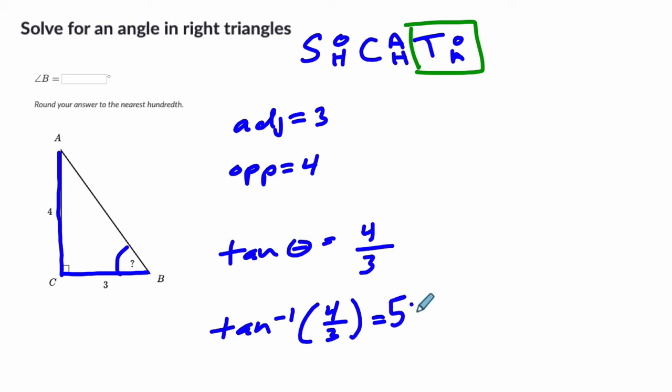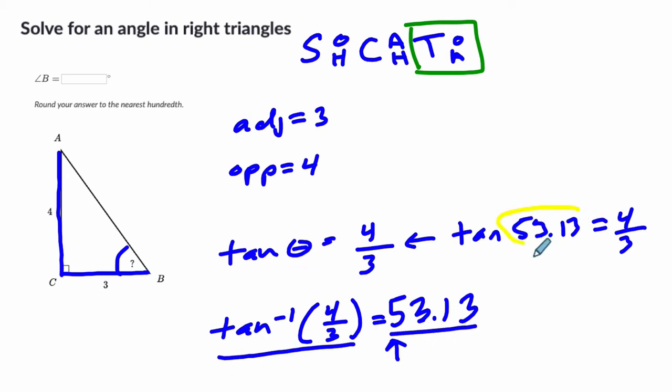So 53.13. So you can see how these two ratios work together. In this first case you would say that the tan of 53.13 is four thirds. In this case right here, look what we're saying. We're saying that the ratio, the angle that has a tangent of four thirds is 53.13. So it kind of takes this information here and here and swaps it around as inverse functions will do.